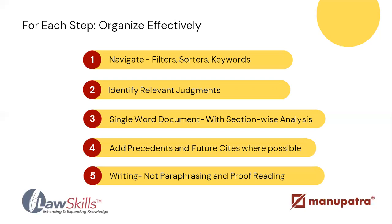Fifth — write, don't paraphrase. A lot of times students will take a section from a previously written research paper or book and try to paraphrase it. This always leads to Turnitin and other plagiarism detection software flagging it, requiring you to redo the work repeatedly. Instead, read through the particular section and try to write it fresh from your own perspective. This gives it a better read, makes it smoother, and simplifies your proofreading in the next step.